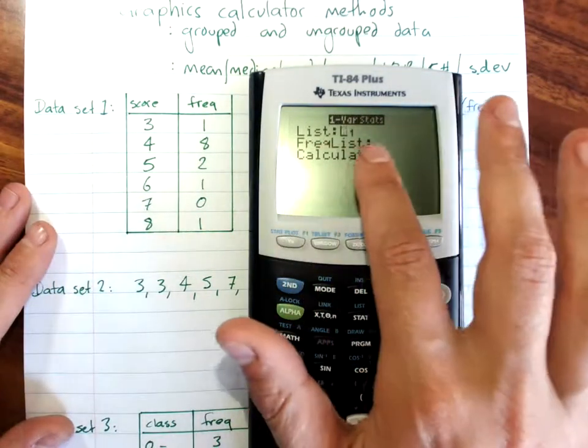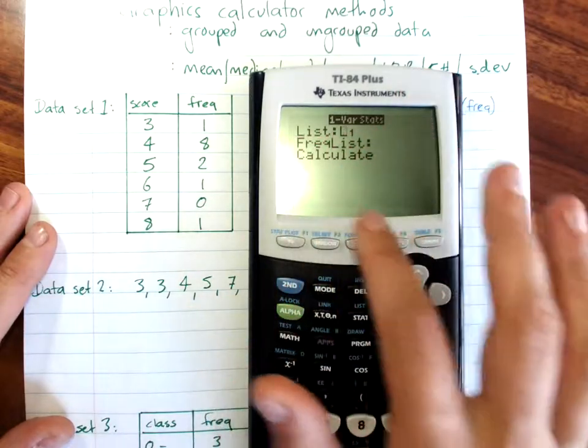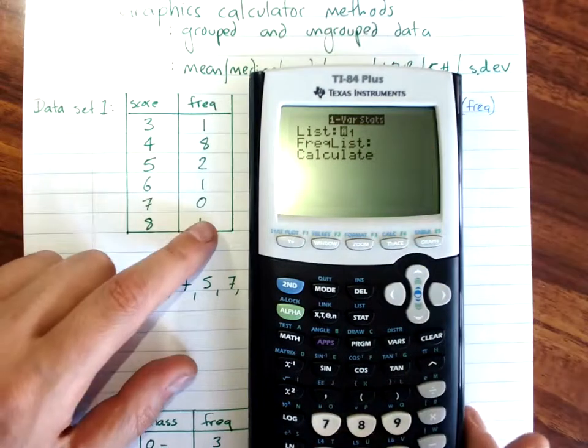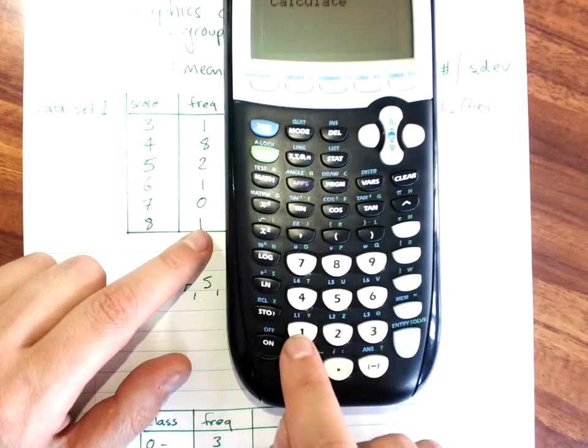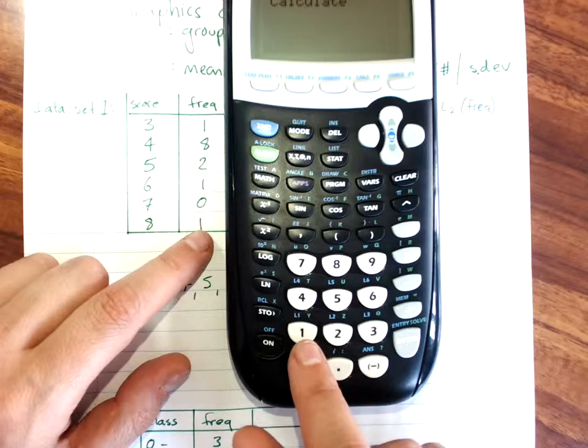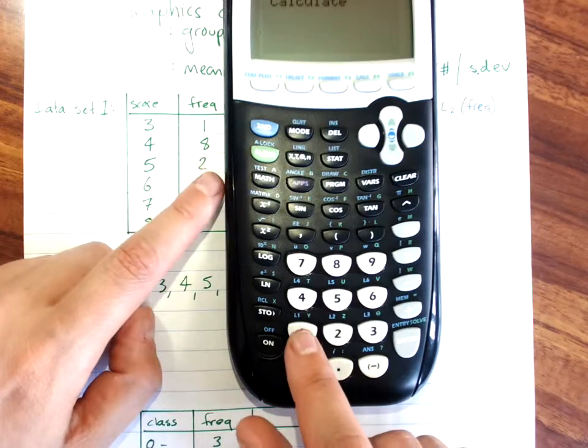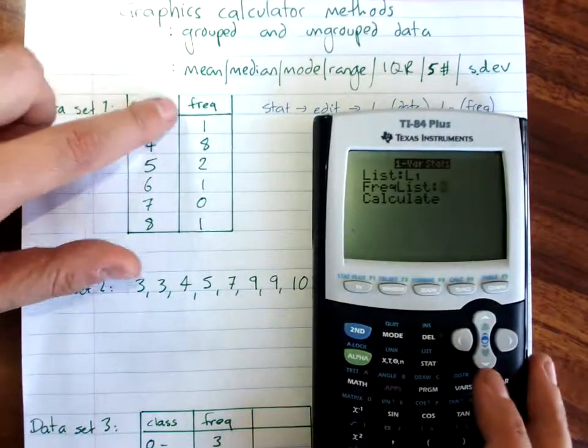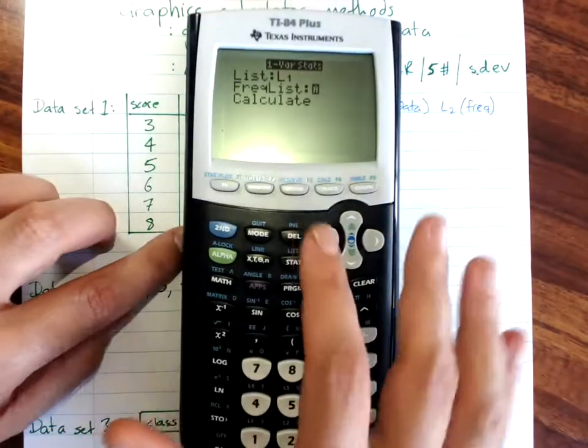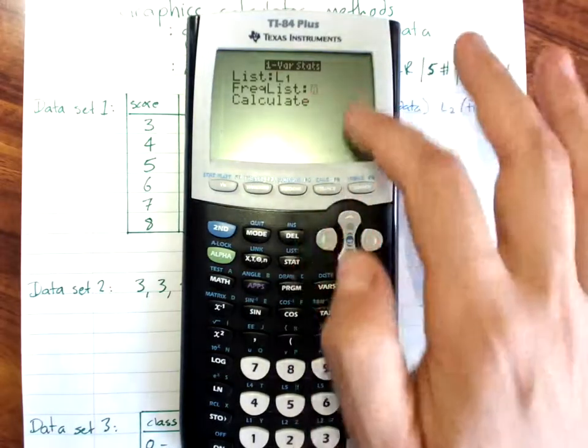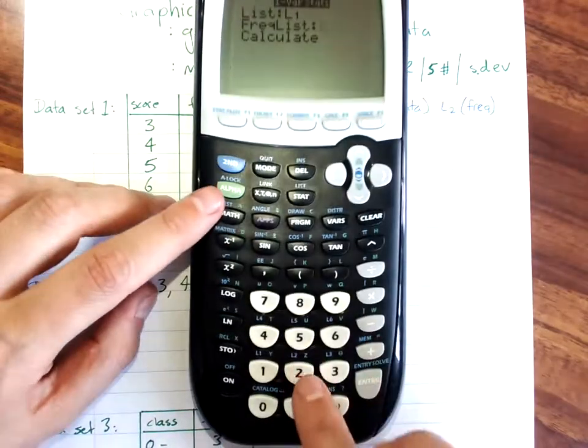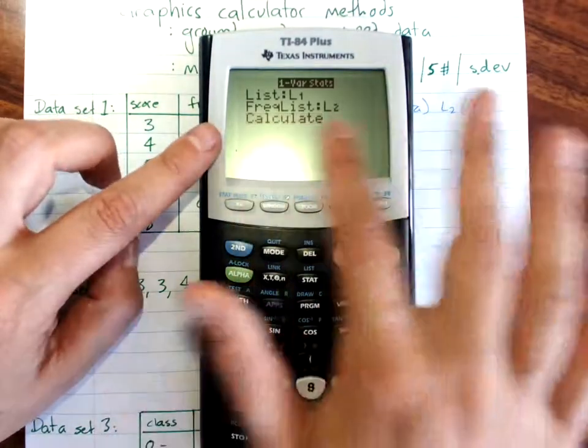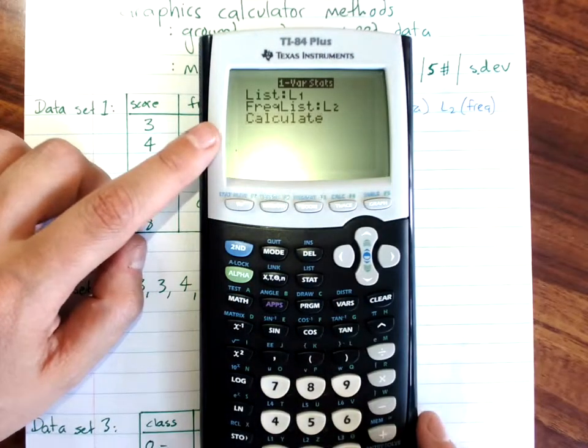Enter. Now this will come up in a couple of different ways, but you want to list your list as L1. Now if it's not in there, L1 is above the 1, so second function, L1. If you've got a frequency list, which we do for this data, then we want to say that. So that's L2, it's down here over the 2. So second function, L2. Move to calculate and press enter.